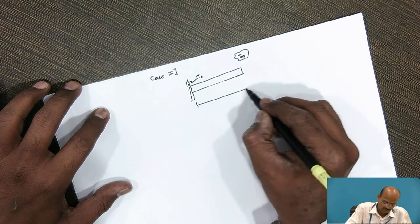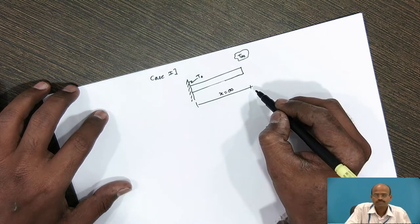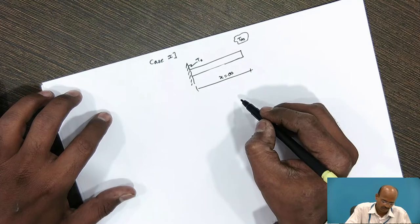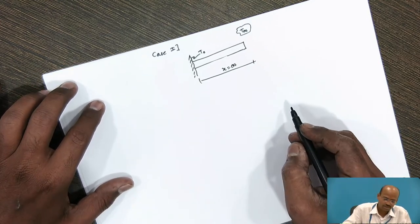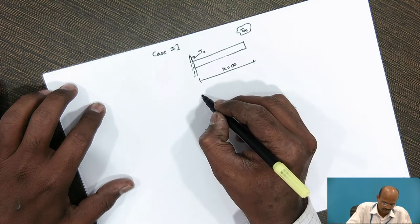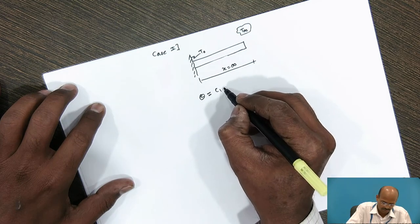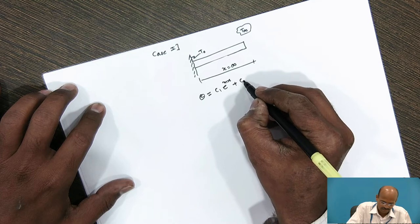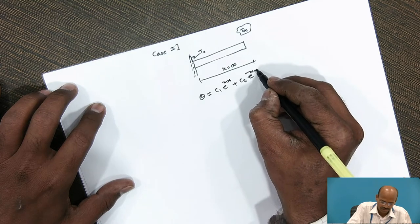The length of the fin is infinity. As we know, the general heat conduction equation is: θ = C₁·e^(mx) + C₂·e^(−mx).